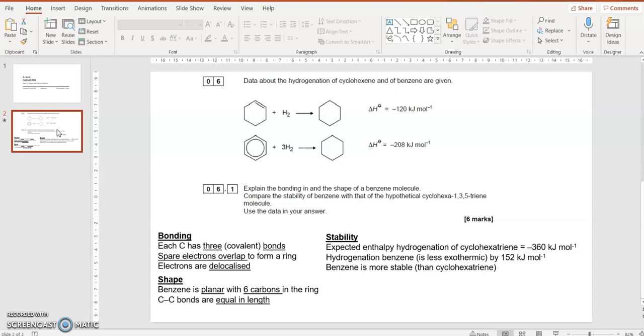That P electron overlaps with a P electron on a neighboring carbon. Those electrons are delocalized, which means they move, and that overlapping of those P electrons or pi electrons forms a pi bond. And that is the ring.